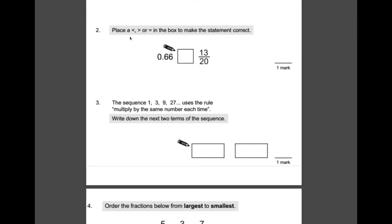Number 2. Place one of these signs in the box to make the statement correct. In order to compare these two numbers, we need to make sure they're in the same format. At the moment, we have decimals here and fraction here, so we need to convert one into the other. The easiest one to do would be this one here. This is 66 hundredths. So, we can change that, call that 66 hundredths.